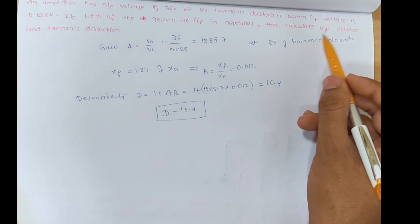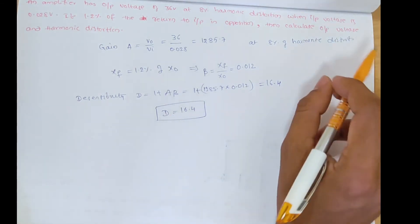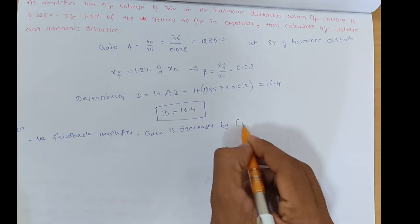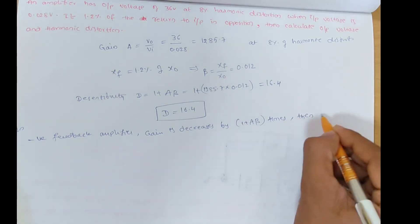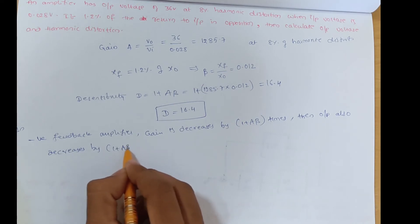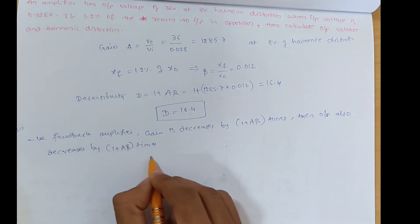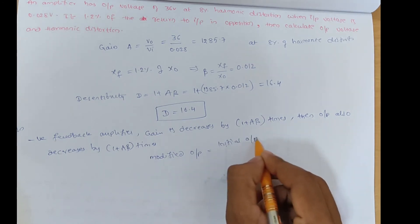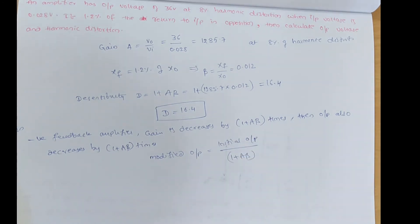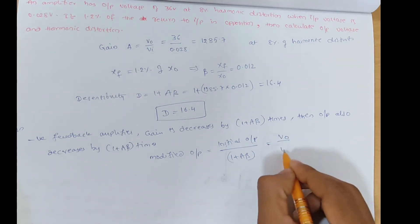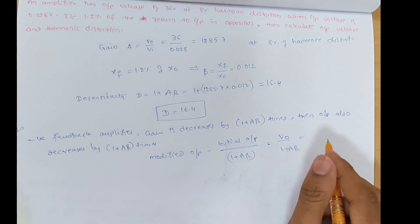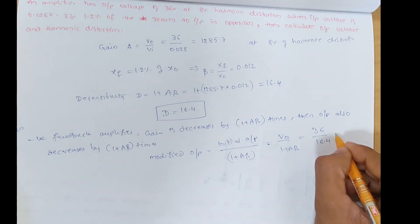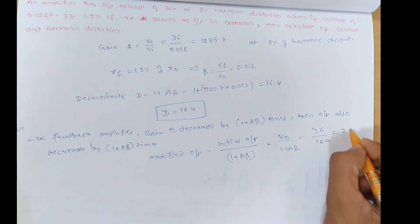We need to calculate output voltage and harmonic distortion. In a negative feedback amplifier, gain decreases by (1 + Aβ) times, and so does the output. Modified output = initial output ÷ (1 + Aβ) = V0 ÷ D. Initially V0 = 36 volts and D = 16.4, so modified output ≈ 2.195 volts.